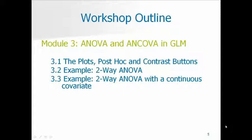Then, once again, we're going to run through a couple of examples. We'll do a two-way ANOVA and then another two-way ANOVA but with a continuous covariate added in. We'll talk about how to get some of the same output and test the same things you would want to test in a pure ANOVA with those covariates in, without those plots, post hoc, and contrast options available.